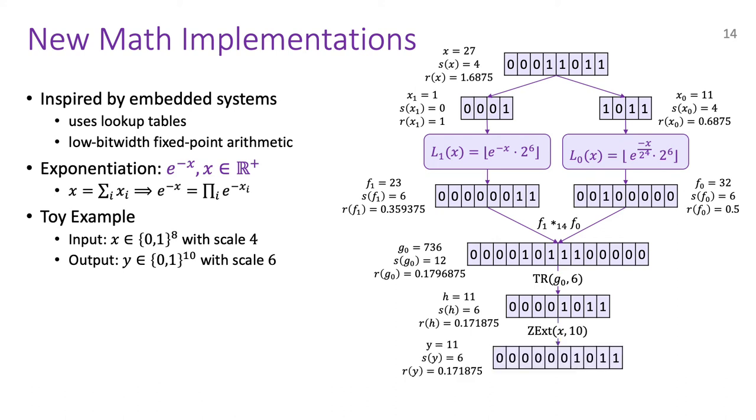Next, the outputs from the lookup tables are multiplied in 14 bits to get a fixed-point integer g0 which represents e to the power minus x but with scale 12. Since the output scale is 6, we truncate reduce g0 by 6 bits to get h which has scale 6 and the bit width is 8. Finally, to get a 10-bit output, we perform an extension. Since we know that e to the power minus x always lies in 0 to 1, we have set up the bit widths in this computation in such a way that the MSB of fi, gi and h are publicly known to be always 0. Thus, our MSB optimization from before is applicable here. In this example, we had an 8-bit input. For cases with larger bit widths, this functionality straightforwardly generalizes to more than two chunks.